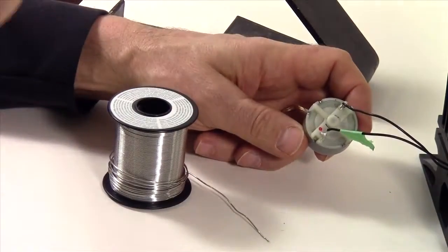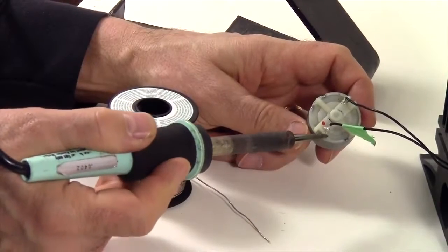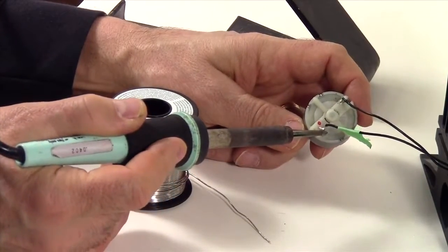Now we're going to use our soldering iron to remove or unsolder the wires.